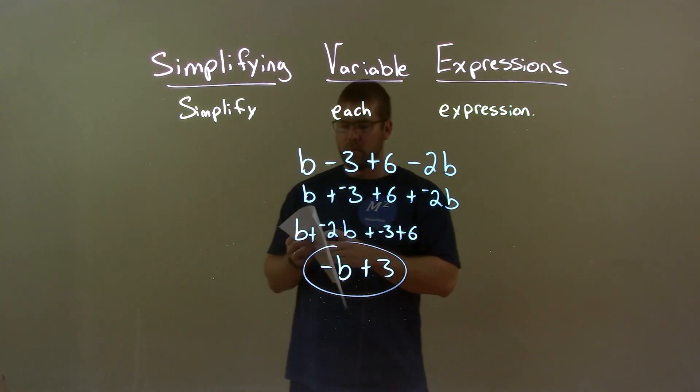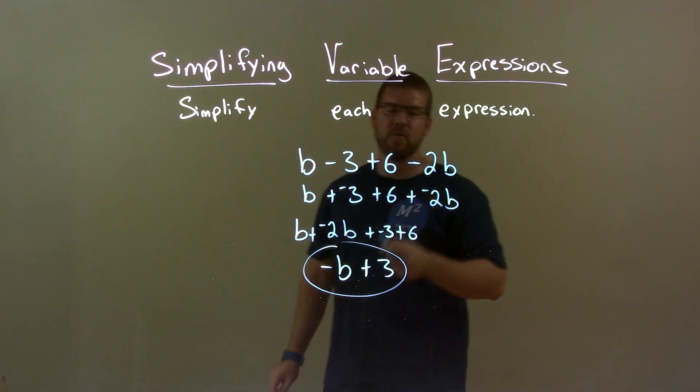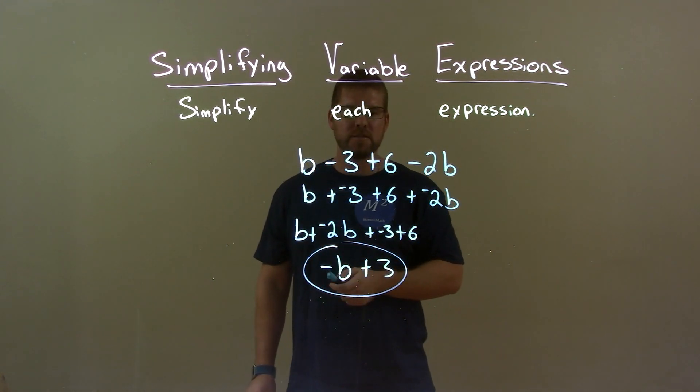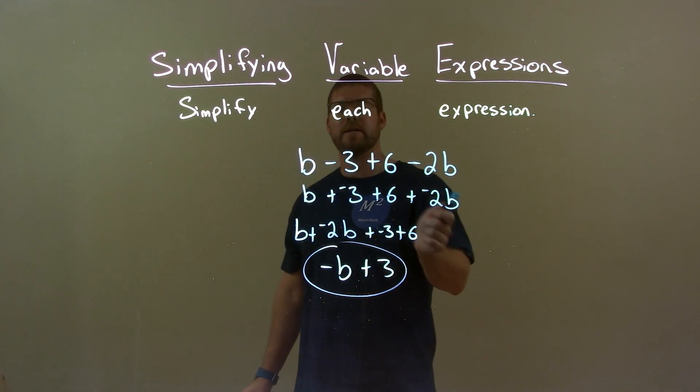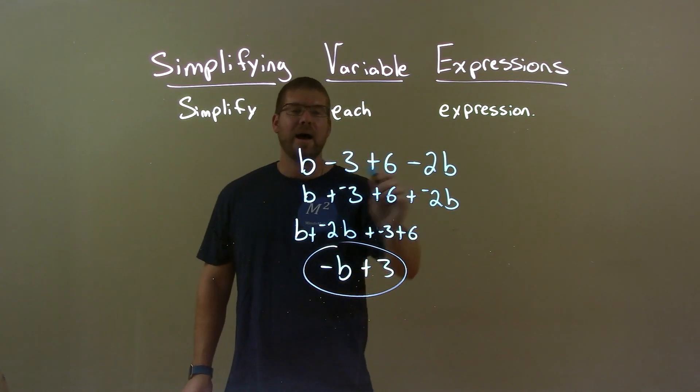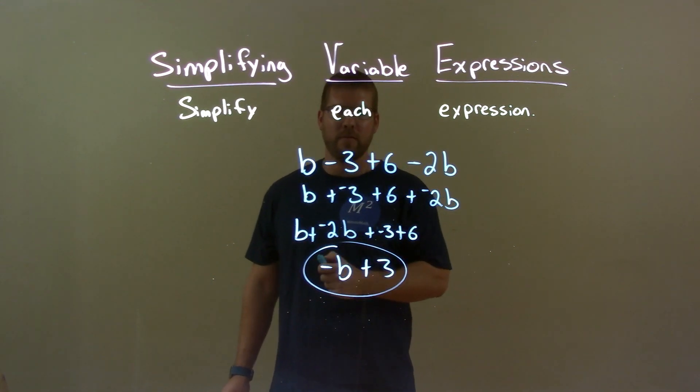So quick recap. We're given b minus 3 plus 6 minus 2b. Well, all my subtractions I made plus a negative. Then I rearranged to put my like terms together. I then simplified. That gave me my final answer, negative b plus 3.